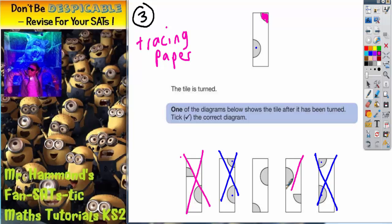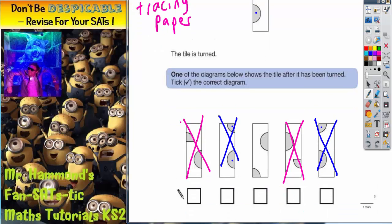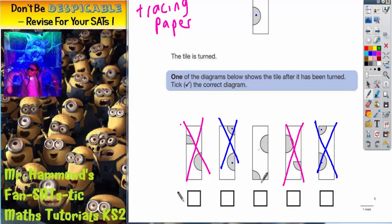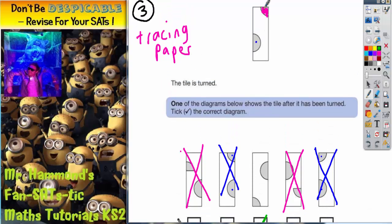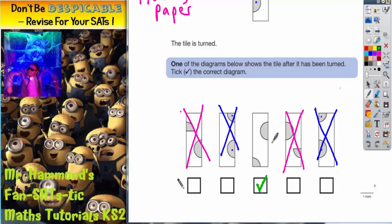We've actually only got one possible option left. So by process of elimination, it's got to be this one here. This is the one we need to tick. But as I said, if you wanted to do a check, you could just trace the rectangle, rotate it around, and you would find that it is this middle rectangle that is the correct one.